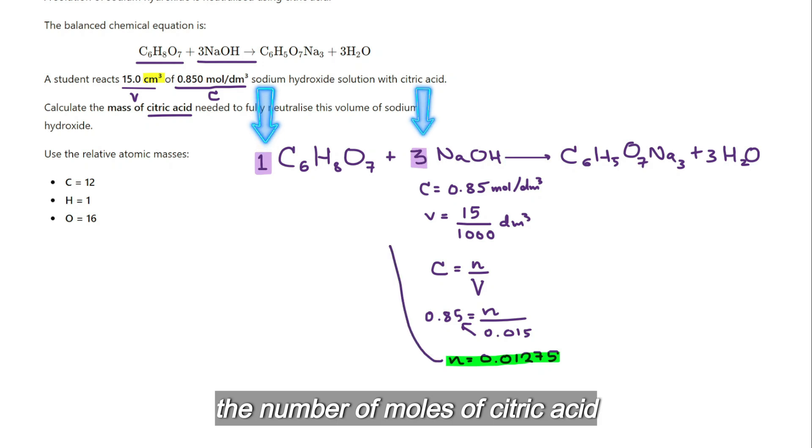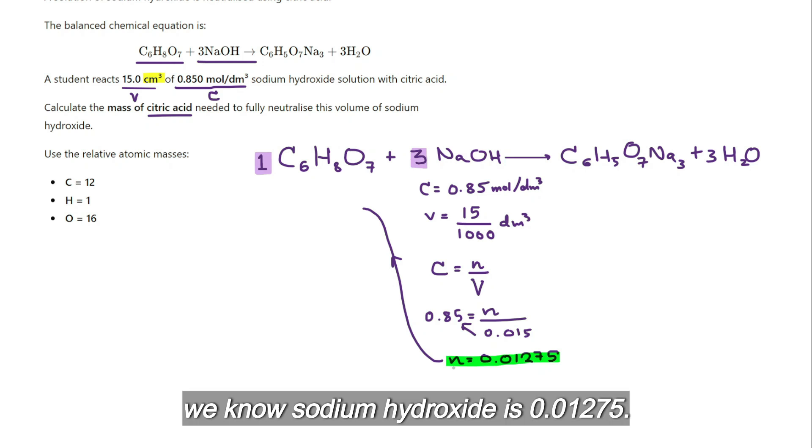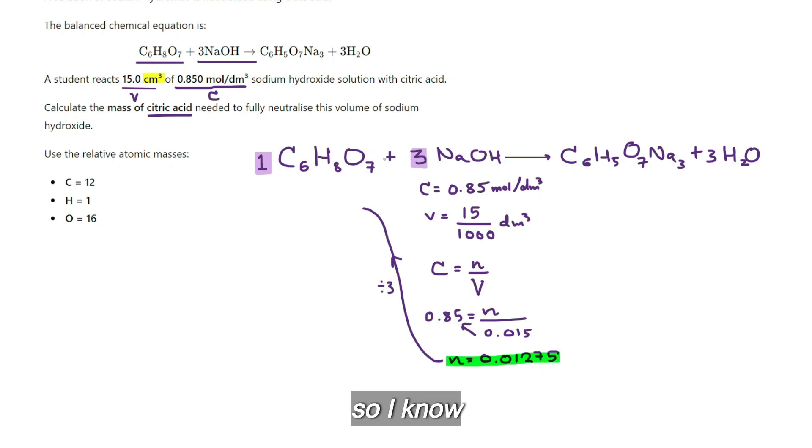So what that means is the number of moles of citric acid is one-third of sodium hydroxide. So we know sodium hydroxide is 0.01275, I need to divide this by 3. So I know the number of moles of C₆H₈O₇. What's the reason? The ratio is 3 is to 1, so here you can see it's only one-third. So the number of moles is 0.00425.